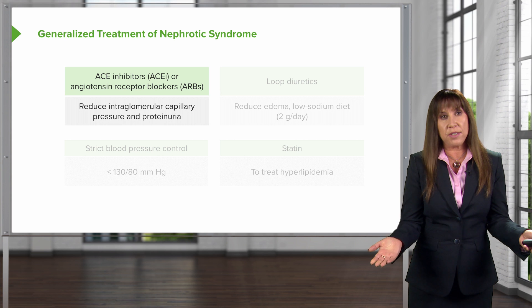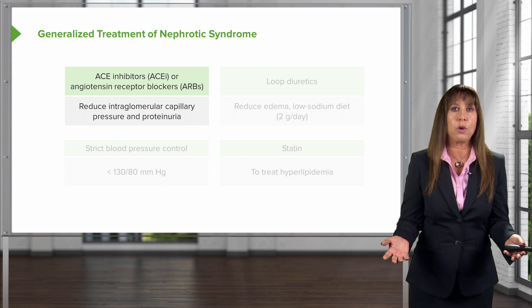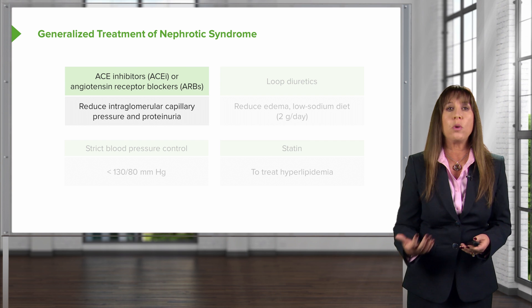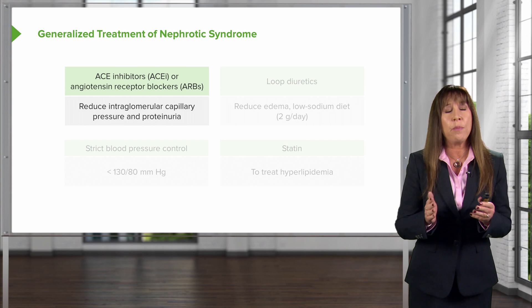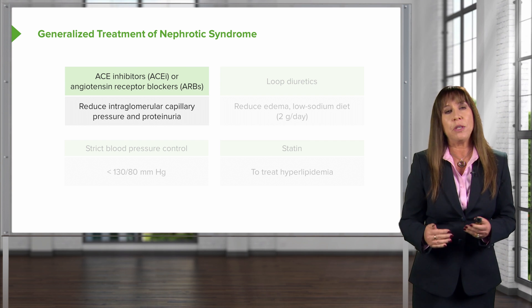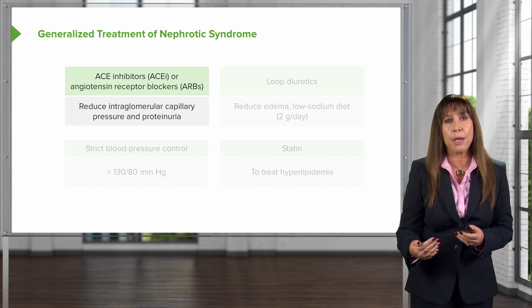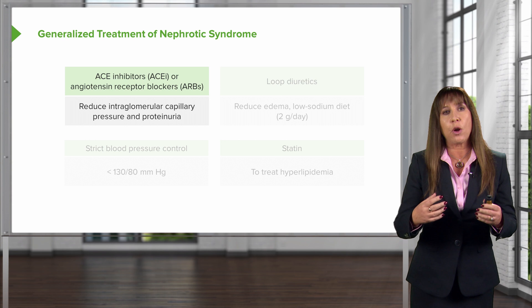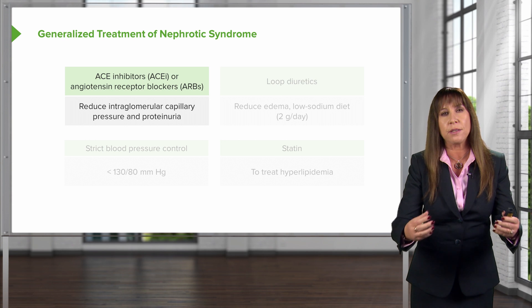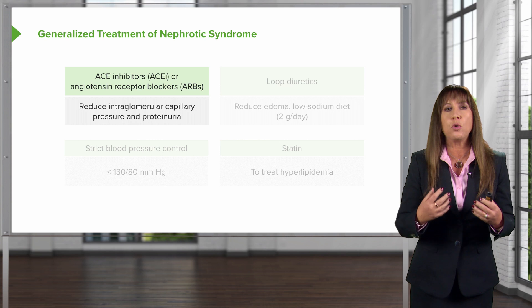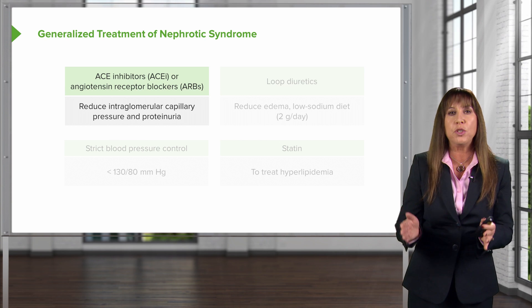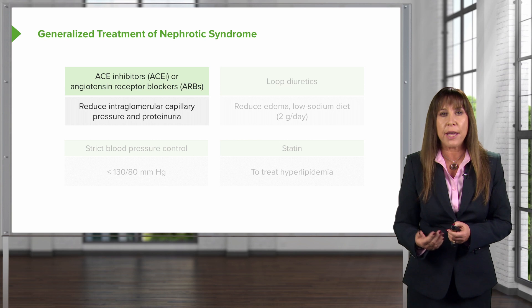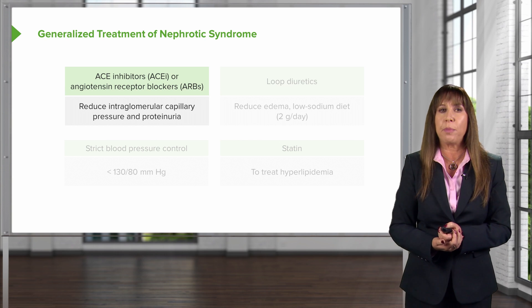When it comes to a patient sitting before you with nephrotic syndrome, regardless of the cause, there are a couple of things in our armamentarium to treat them. One of the most important is using medications like ACE inhibitors or angiotensin receptor blockers. These agents antagonize the RAS system — the renin-angiotensin-aldosterone system — which reduces intraglomerular capillary pressure and reduces proteinuria, and that's exactly what we want.